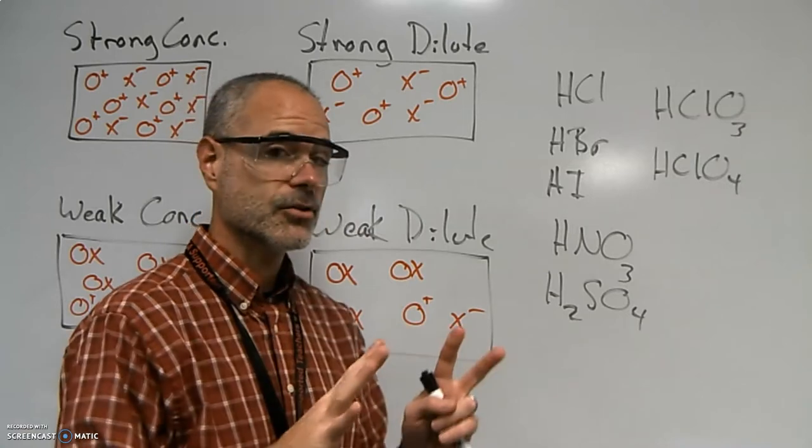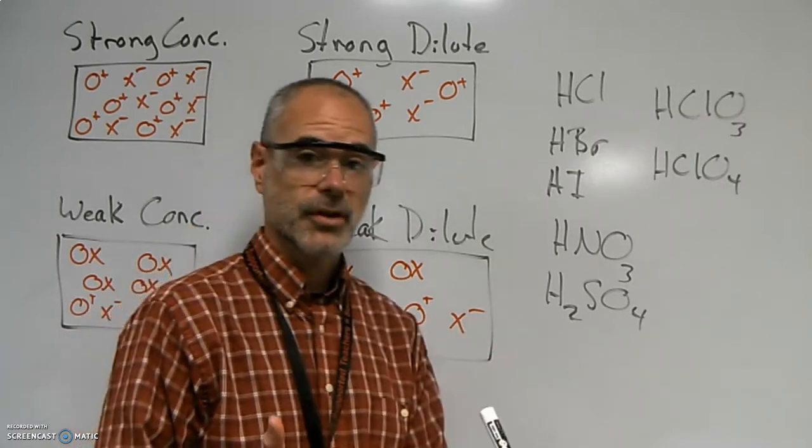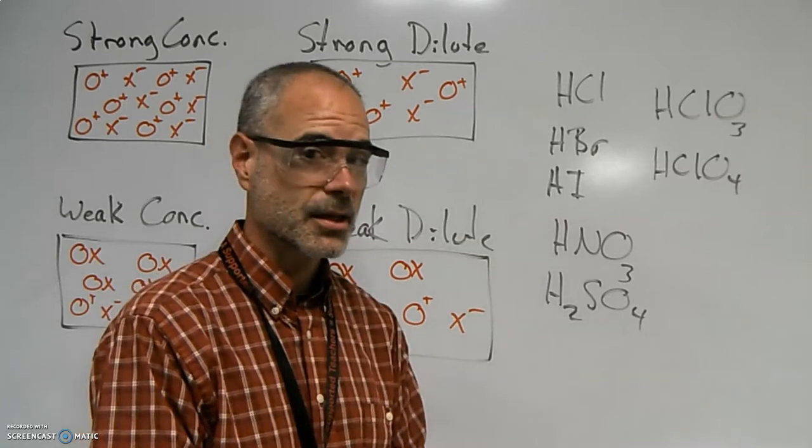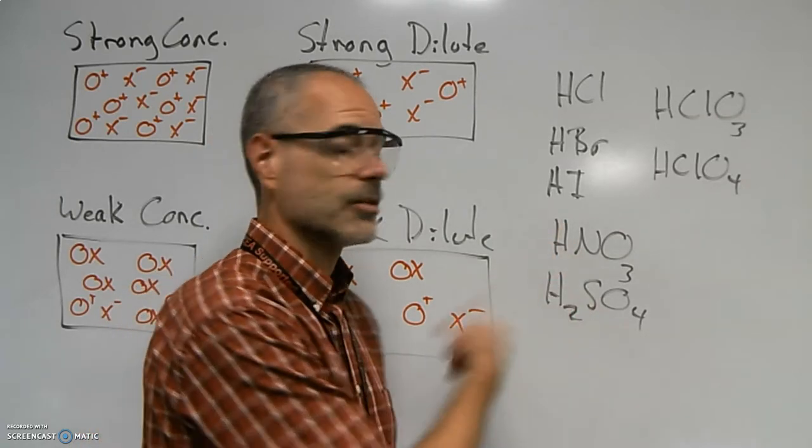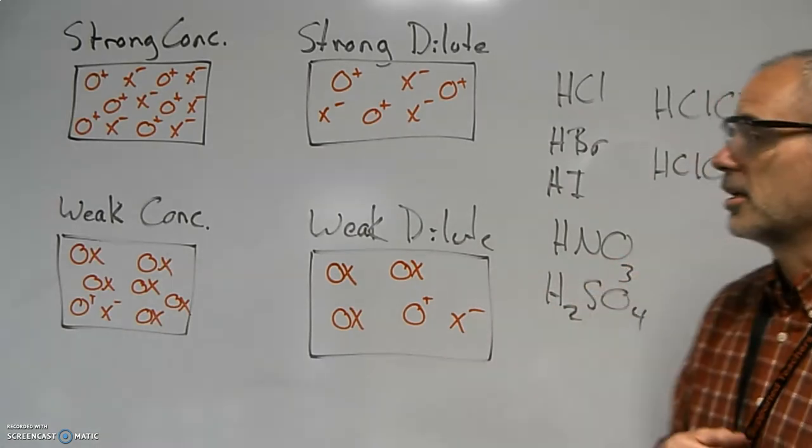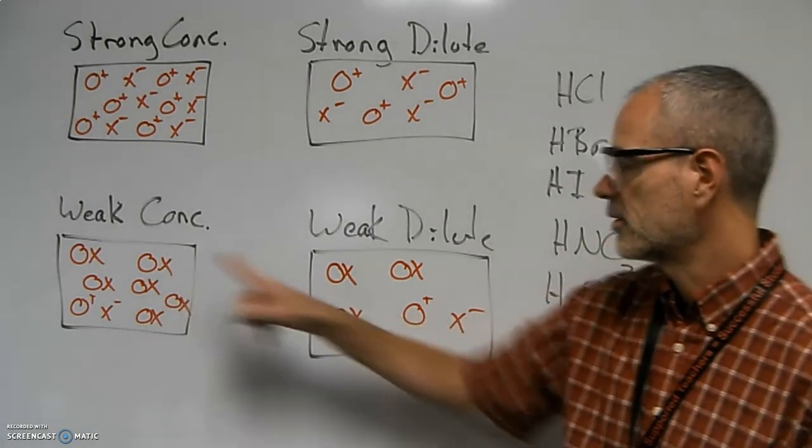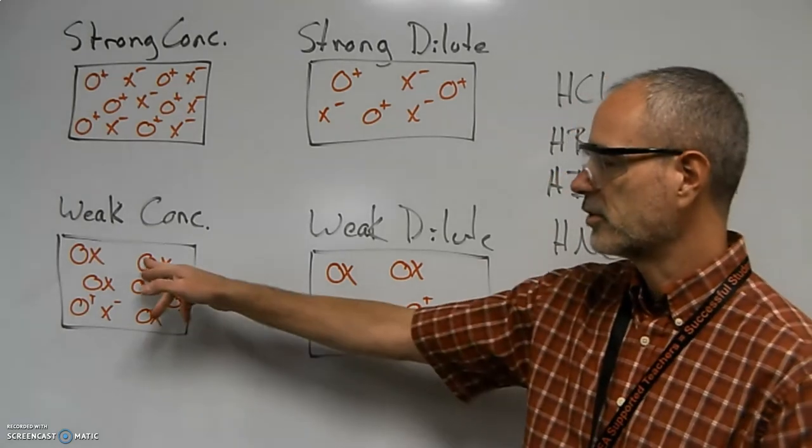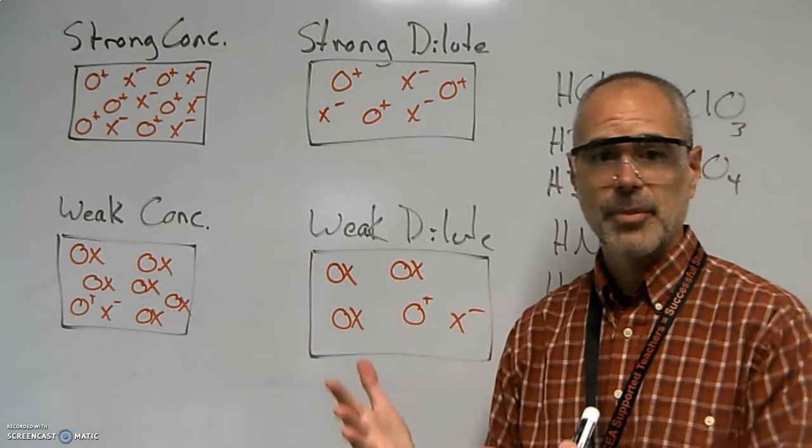So these are the seven strong acids that we will deal with in this class. Anything outside of those seven, we will consider weak. So if strong acids separate very well in solution, weak acids do not separate very well. And our examples, the way I'm kind of putting this in here, is just these are just two different parts to the compound.